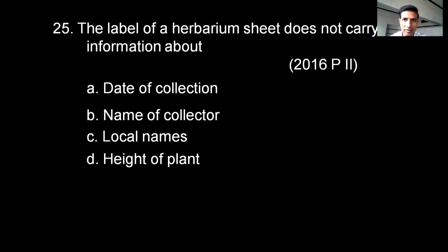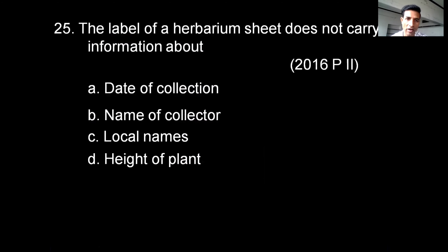The label of a herbarium sheet does not carry information about: date of collection, name of the collector, local names, or height of plant. Date of collection, name of collector, and local names can all be written on the herbarium sheet, but height of plant varies according to environmental conditions and other factors, so it cannot be recorded. The correct option is D — height of plant.